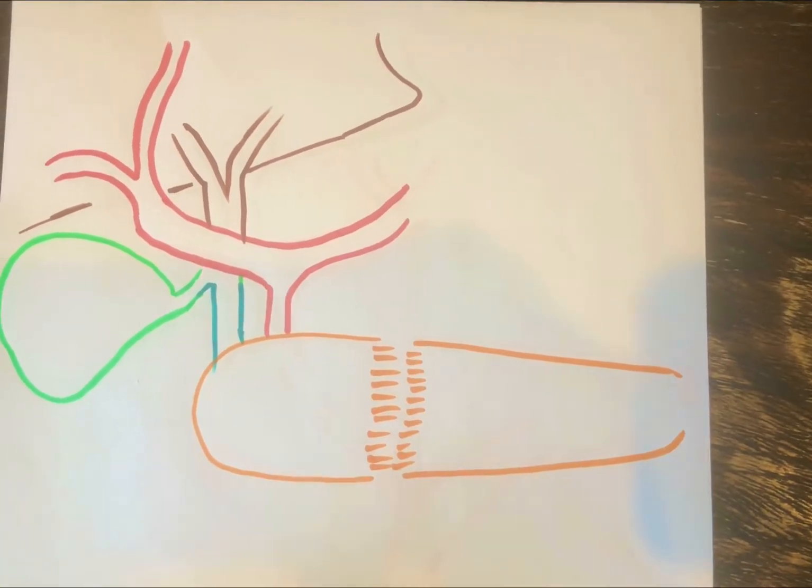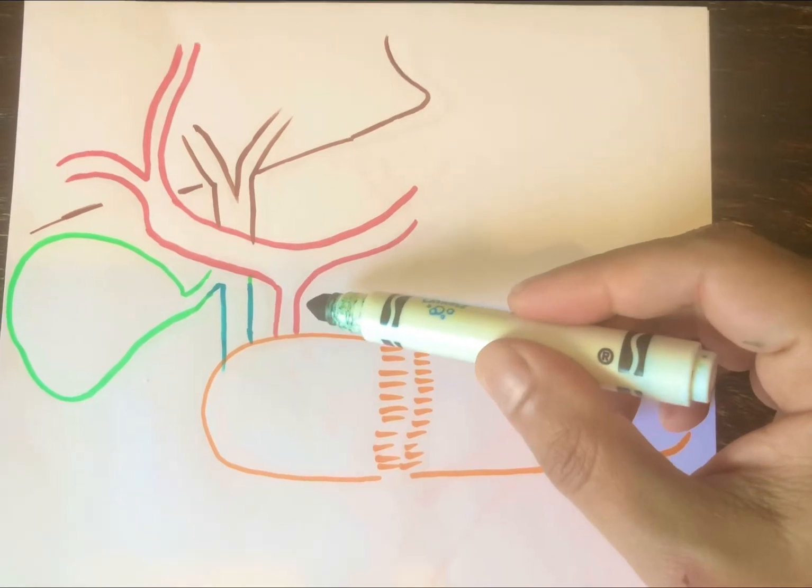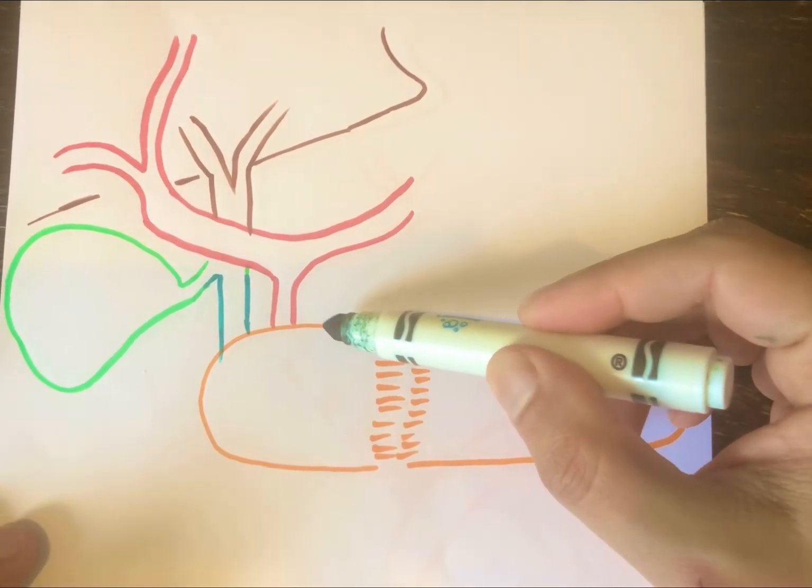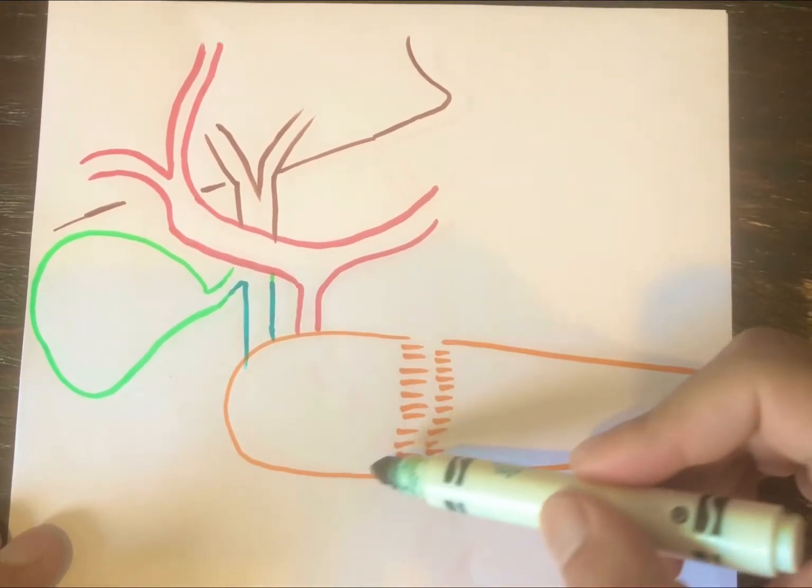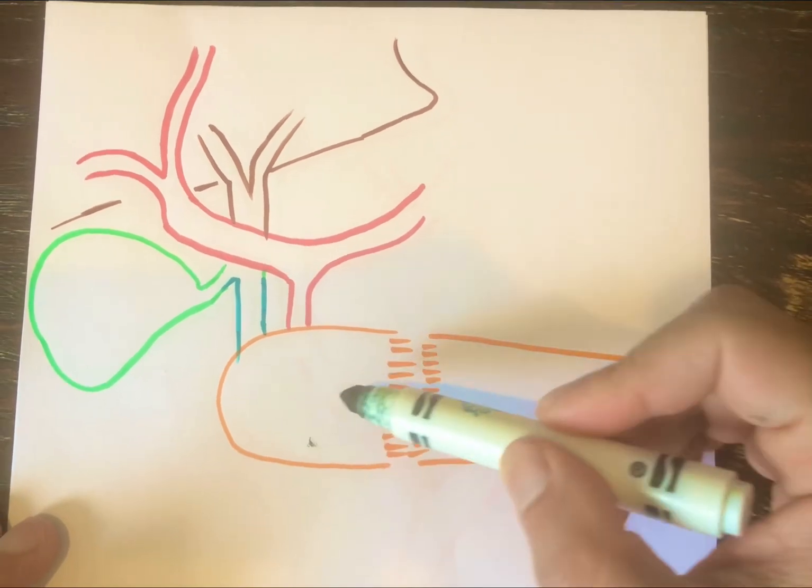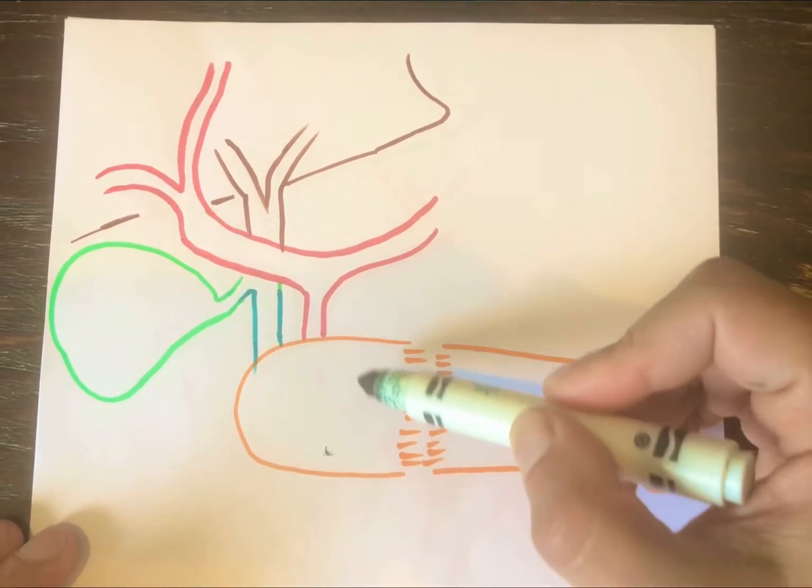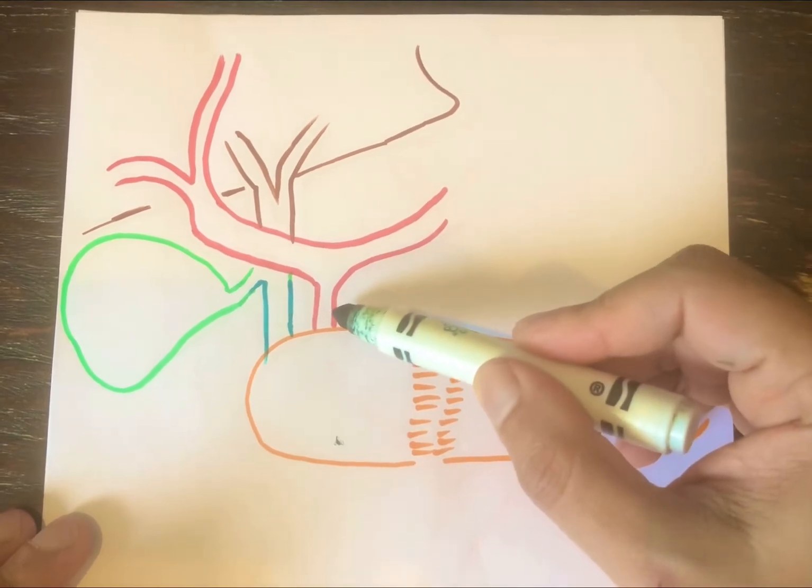So today we are going to talk about the gastroduodenal artery and its significance with the Whipple operation. Basically, it's the head of the pancreas that you're going to remove, and this is the blood supply to the head of the pancreas, the gastroduodenal artery.